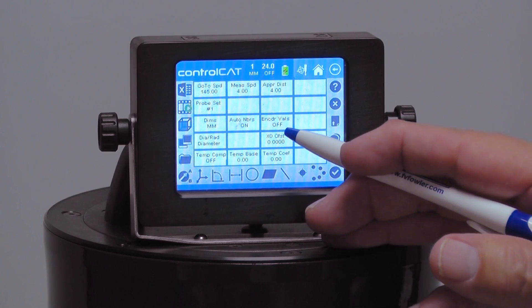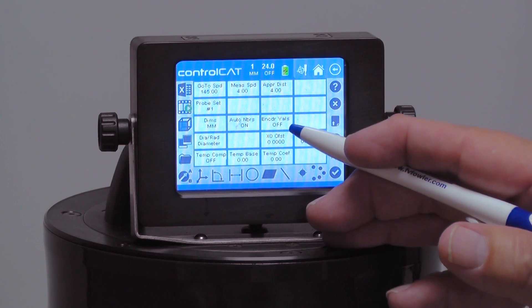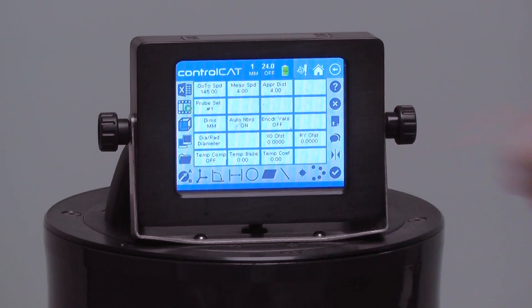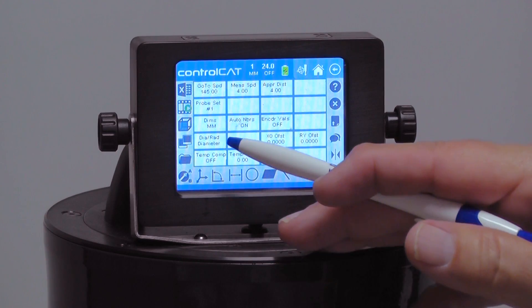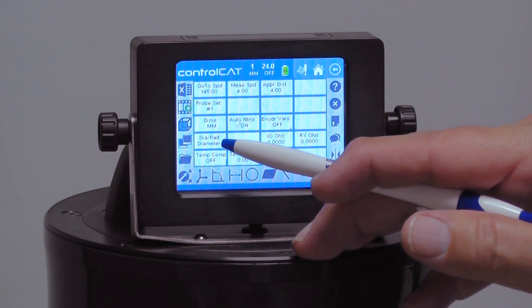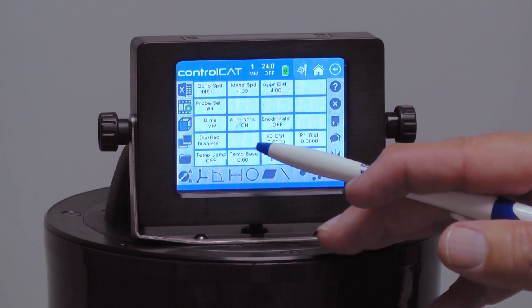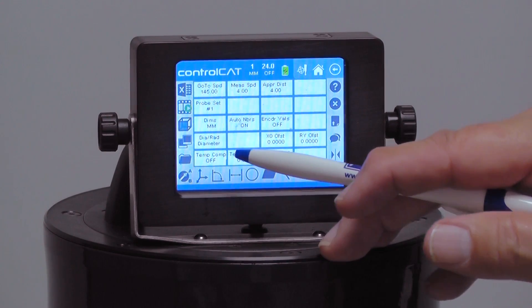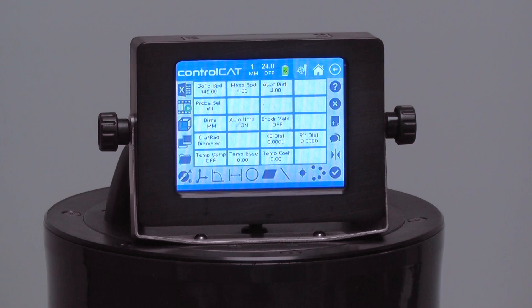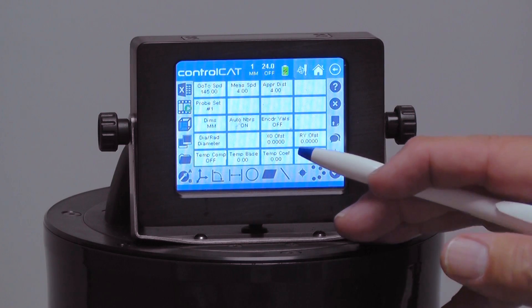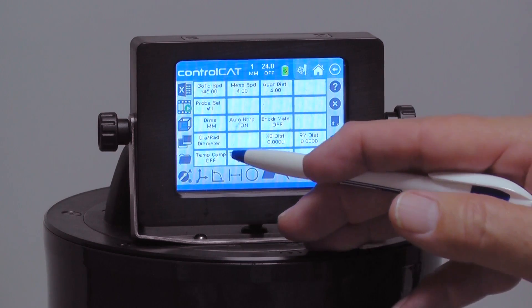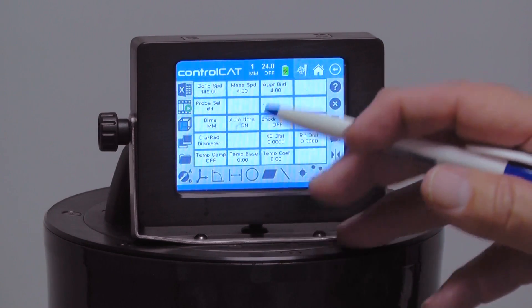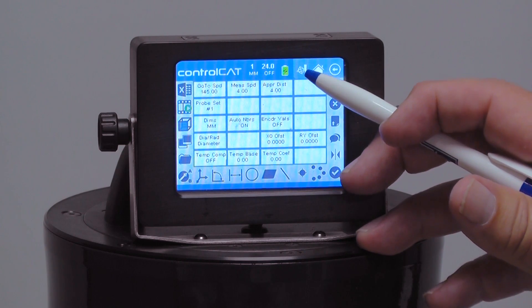I think it's important to have auto number on. Encoder values is off. We're not going to do any editing there. Some of these others we're not going to be messing with at all. Diameter radius, this is if we have a different diameter on our calibration sphere. We have X and Y offsets we can put in here. Temperature compensation is off. All of this is off, so once it's set up we're pretty much done.